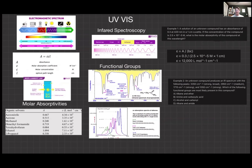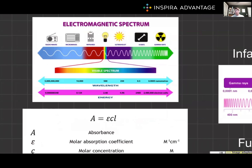Hello, I'm Brenton, one of the MCAT tutors here at Inspira Advantage, where we help students get to medical school and other professional programs. Welcome back to another episode of MCAT Bytes. In this video, we'll be diving deep into UV-Vis and infrared spectroscopy. These are two essential techniques for analyzing the structure and properties of molecules. Understanding these concepts is crucial for the MCAT, so let's get started.